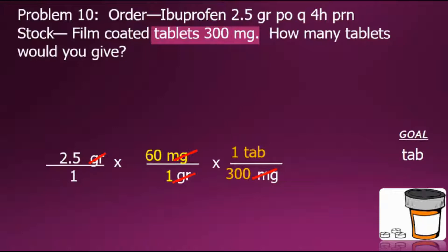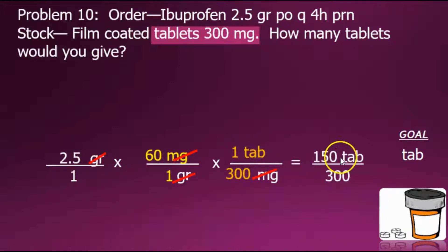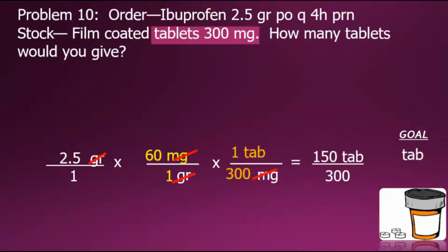Next we multiply the fractions together by multiplying the numerators to create the new numerator. Simplifying, we perform a division of the numerator 150 by 300, which gives us one half of a tablet. So each dosage would be half a tablet.